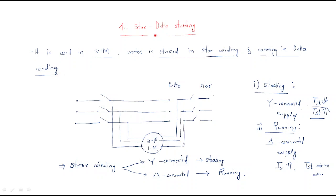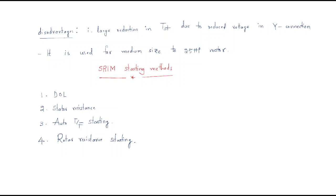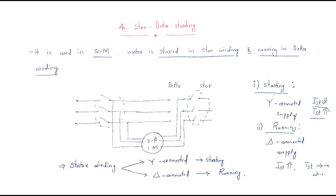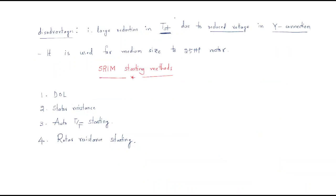This method has some disadvantages. The first is a large reduction in starting torque, because initially a reduced voltage is applied in the star connection system. Due to the reduced voltage, the starting torque will be less. So large reduction in starting torque in the star connection system is the disadvantage.